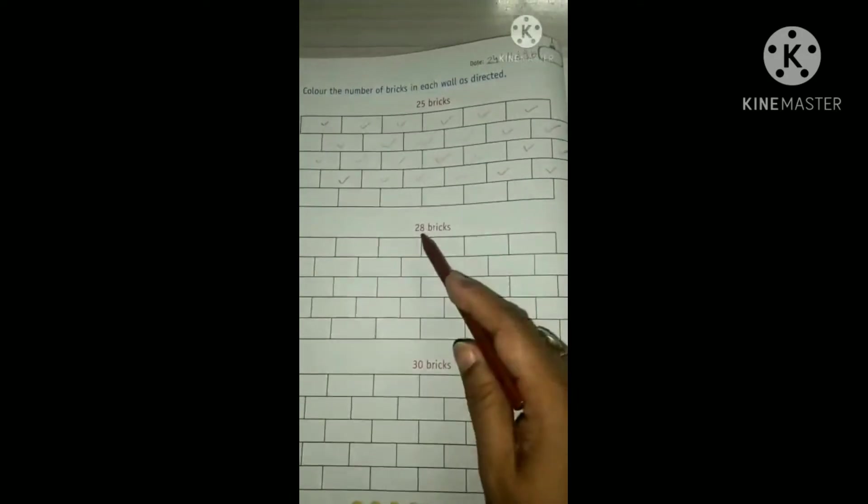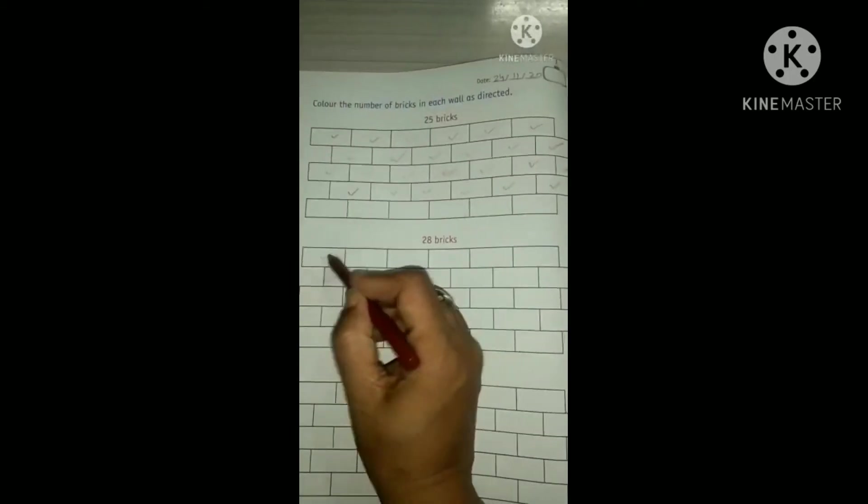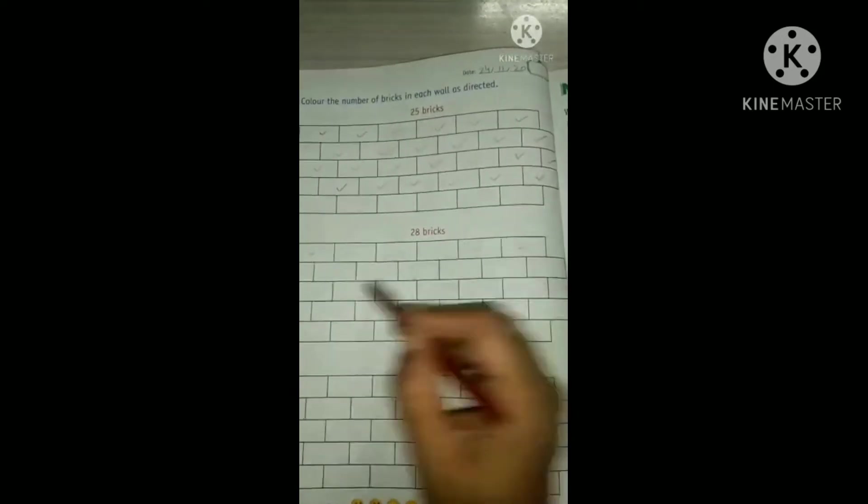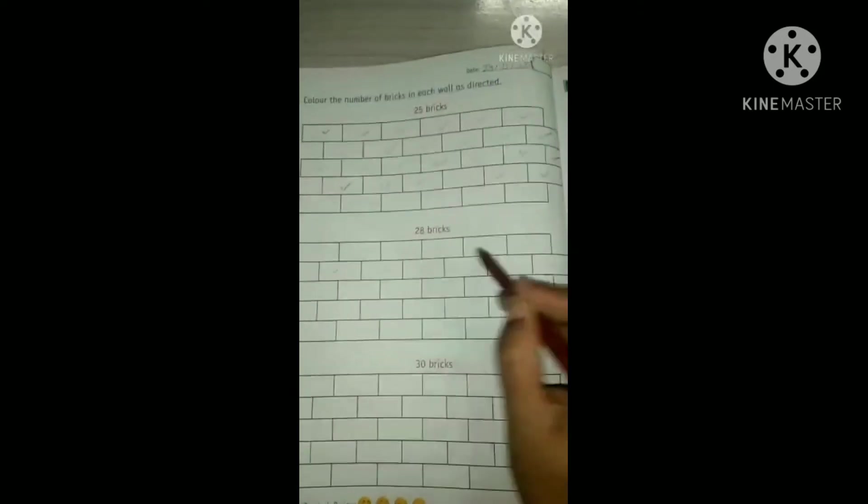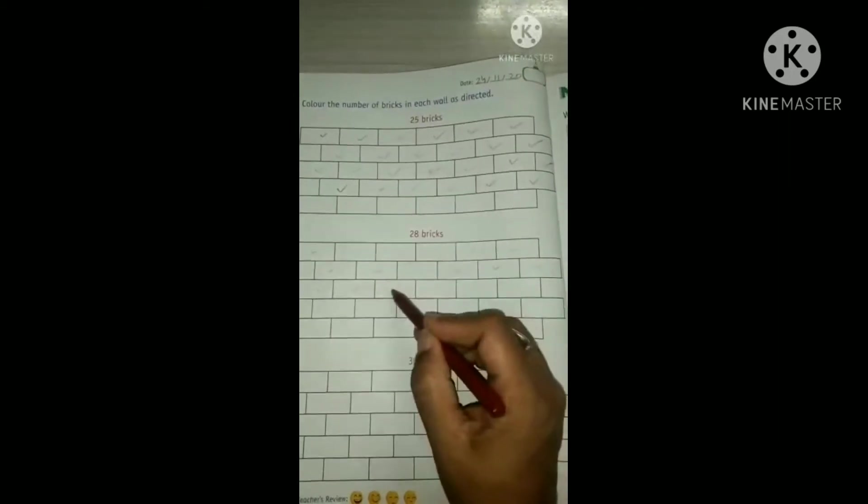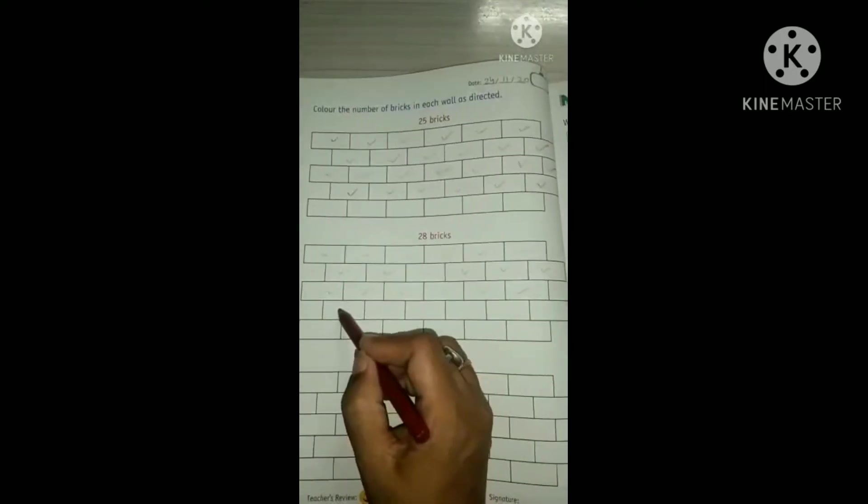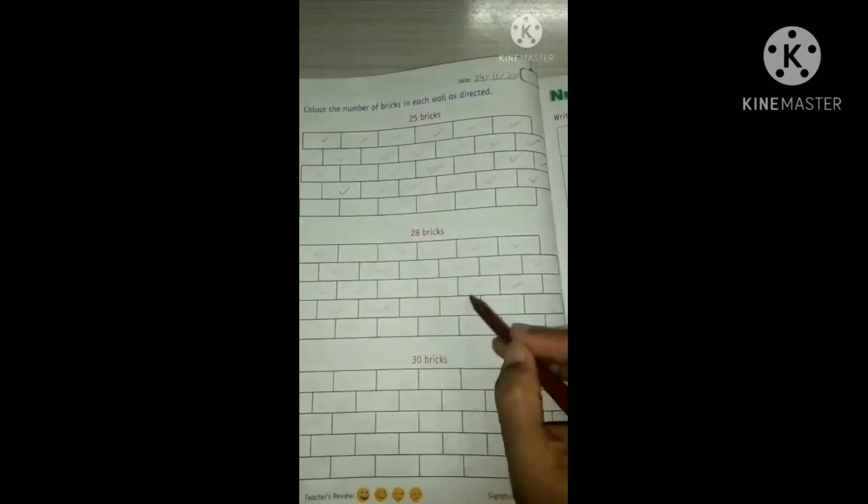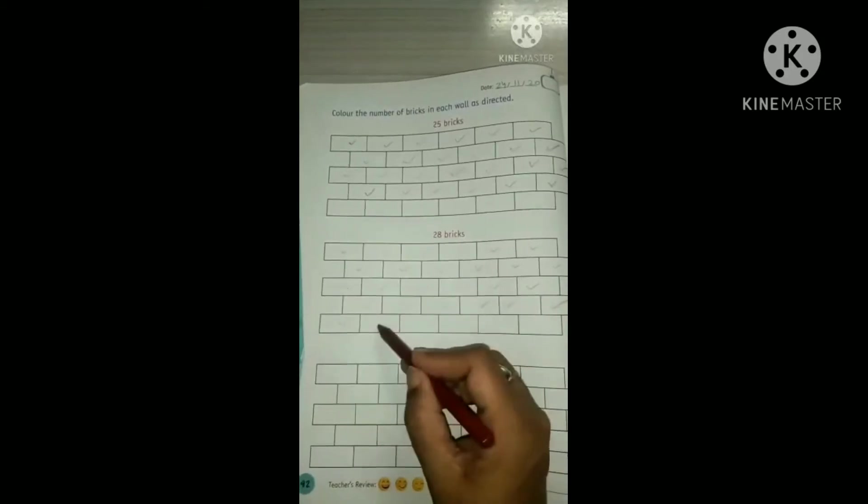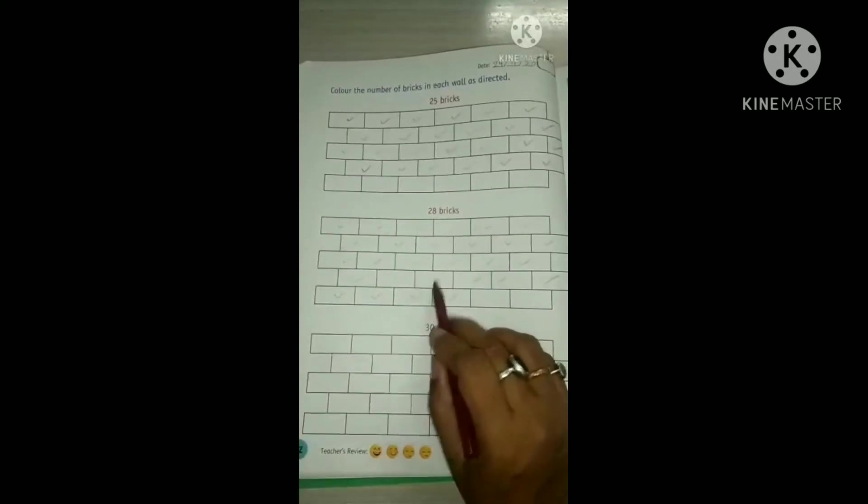Now see, what is it? 28 bricks. In the same way, you have to do this. 1, 2, 3, 4, 5, 6, 7, 8, 9, 10, 11, 12, 13, 14, 15, 16, 17, 18, 19, 20, 21, 22, 23, 24, 25, 26, 27, 28. This much only we will color.